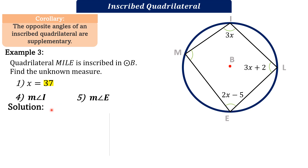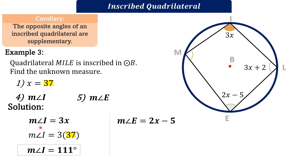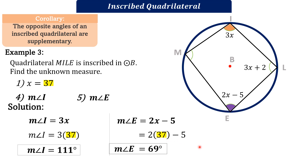Next, number 4, the measure of angle I. The degree measure of angle I is 3X. Substituting X equals 37: 3 times 37 equals 111 degrees. For number 5, the measure of angle E is 2X minus 5. Substituting X equals 37: 2 times 37 minus 5. The measure of angle E is 69 degrees.